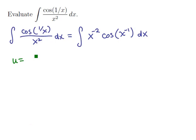So what should our u be? Well, notice that the only thing in parentheses here is the x to the minus 1. So that means our derivative will be negative x to the negative 2. We can multiply both sides by dx and divide both sides by minus 1 and we would get negative du is equal to x to the minus 2 dx.